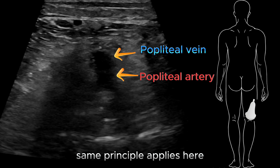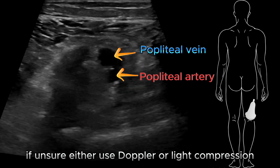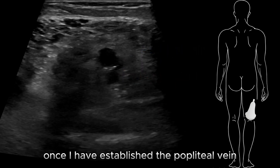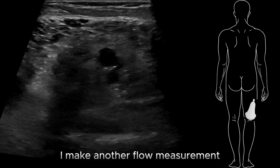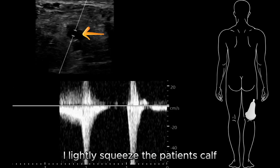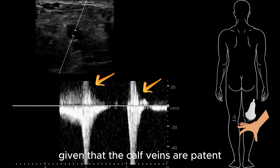The same principle applies here — if unsure, either use Doppler or light compression. Once I have established the popliteal vein, I make another flow measurement. With the cursor on the popliteal vein, I lightly squeeze the patient's calf. This should show a spike of flow, given that the calf veins are patent.